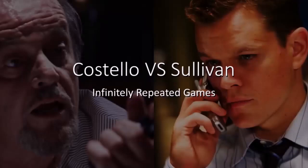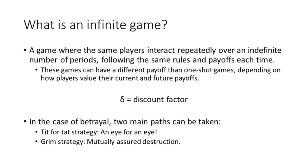So what happens if players actually decide to cooperate? Let's look at the case of Costello and Sullivan. First, let's go over what an infinitely repeated game is. An infinitely repeated game is a game in which the same players interact repeatedly over an indefinite number of periods, following the same rules and payoffs each time.